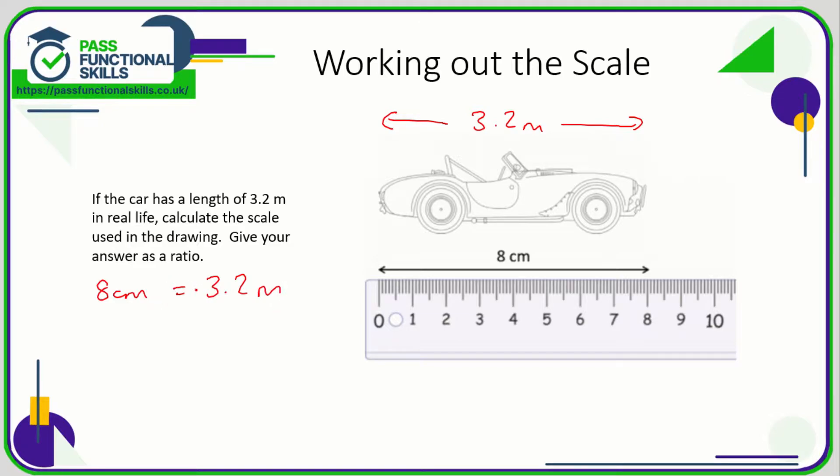Now if I'm going to give this as a ratio, I need to make sure I've got the same units. 8 centimeters - well there's 100 centimeters in a meter, so 3.2 times 100 is 320. So we know that the ratio is 8 to 320.